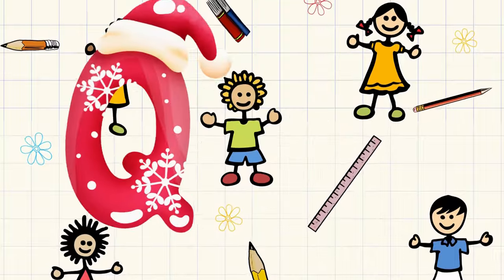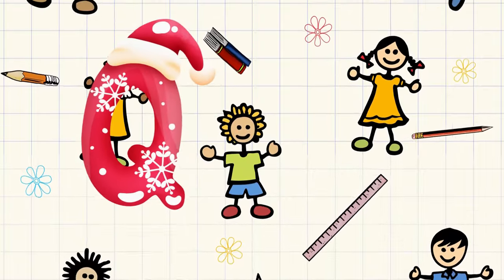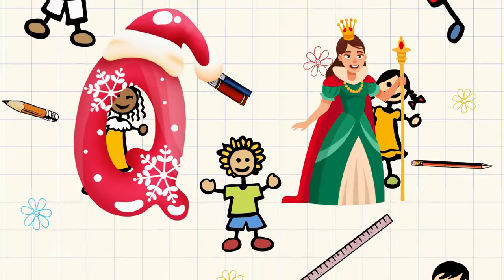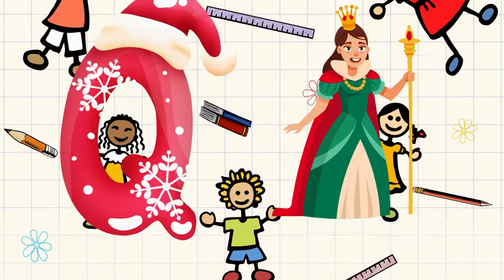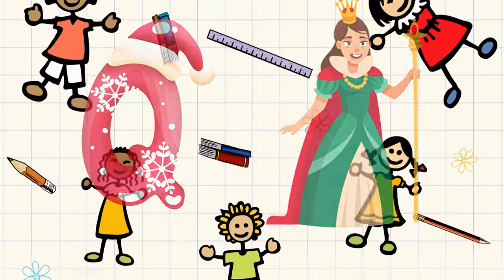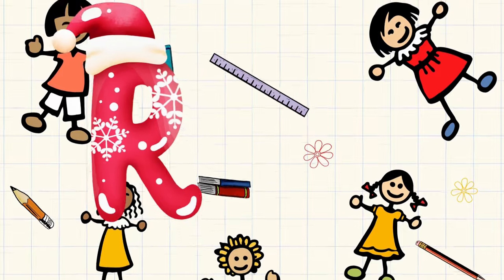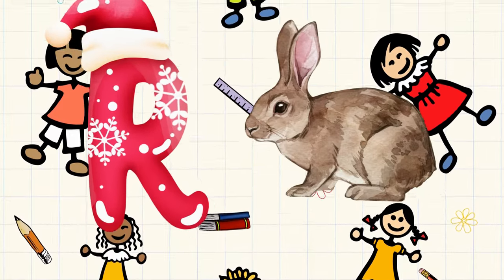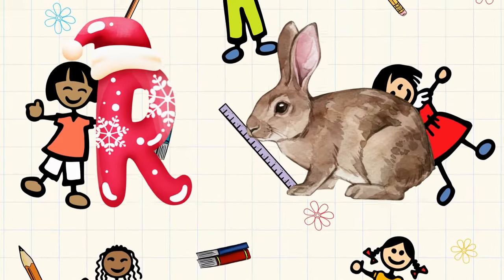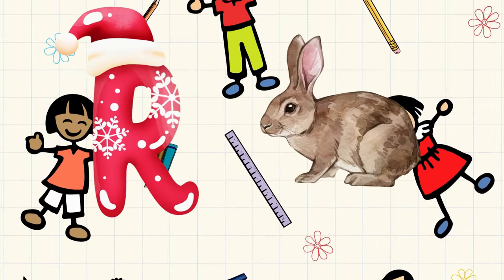Q is for queen, qu-qu-queen. R is for rabbit, r-r-rabbit.